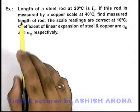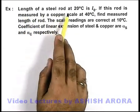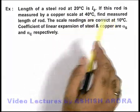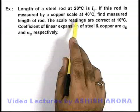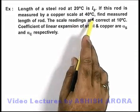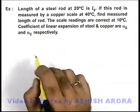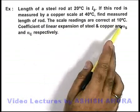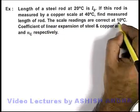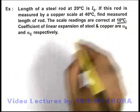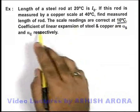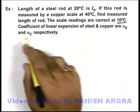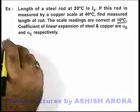In this example, we are given that the length of a steel rod at 20 degree centigrade is l₀. This rod is measured by a copper scale at 40 degree centigrade, and we are required to find the measured length of the rod. It is also given that the scale readings are correct at 10 degree centigrade, which is considered to be the graduation temperature of the scale. The coefficient of linear expansion of steel and copper are alpha_s and alpha_c respectively.